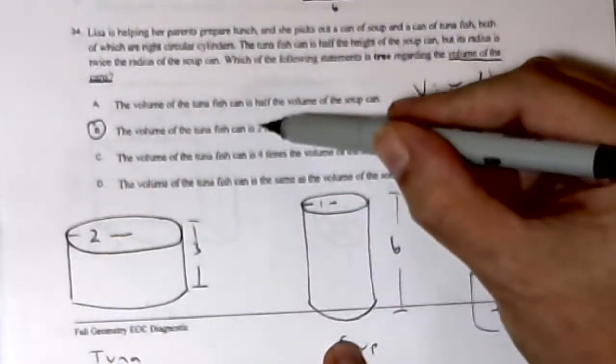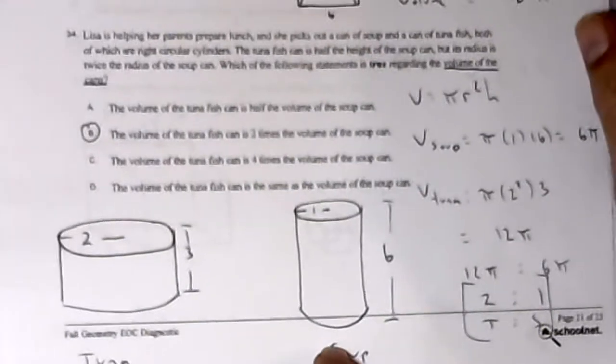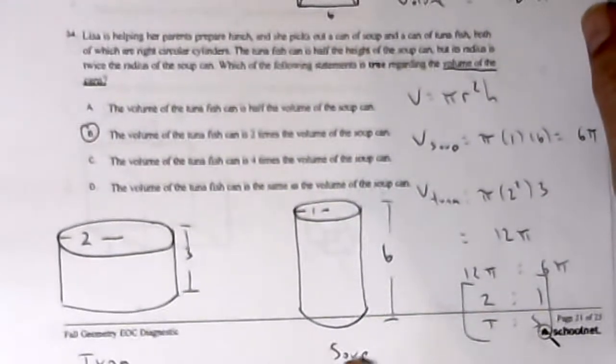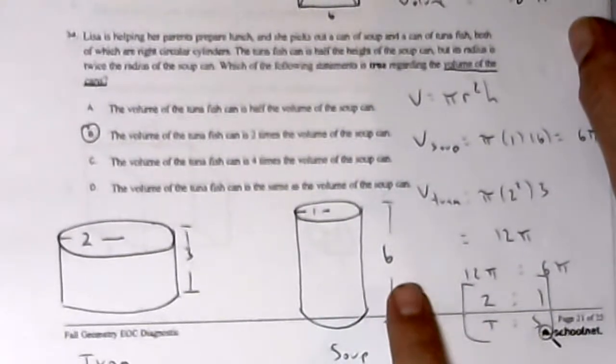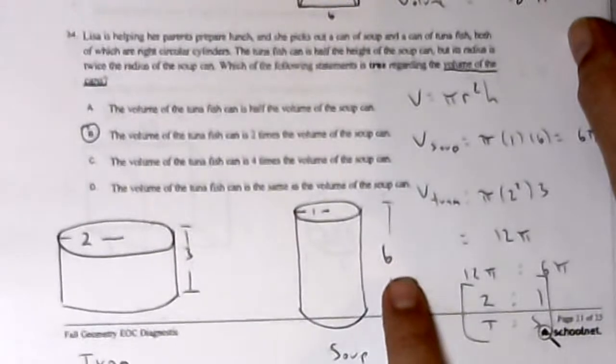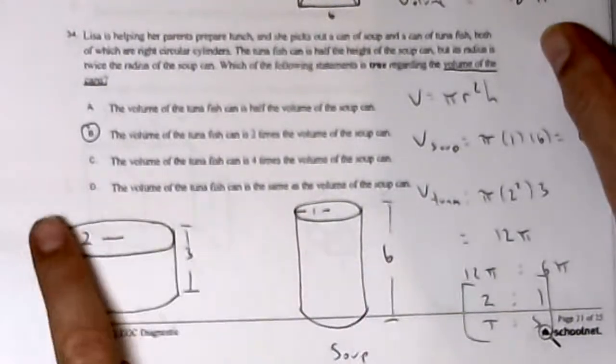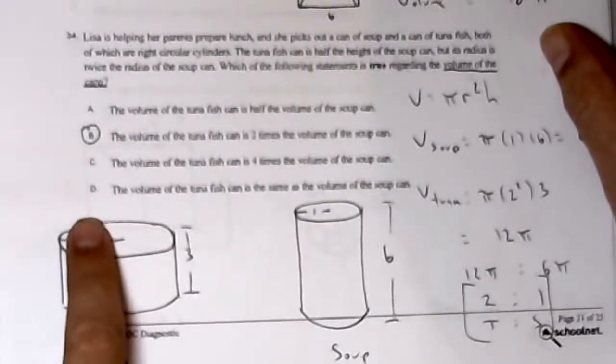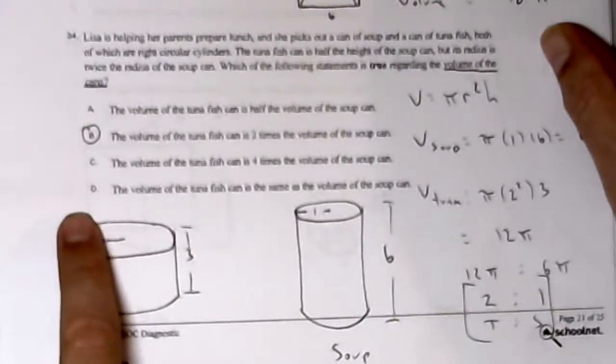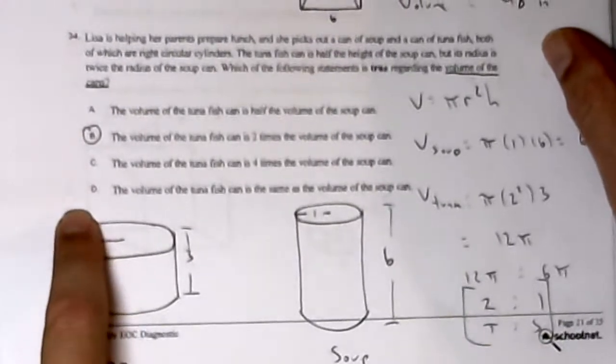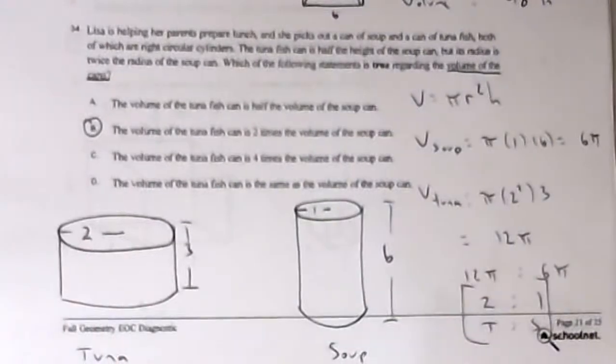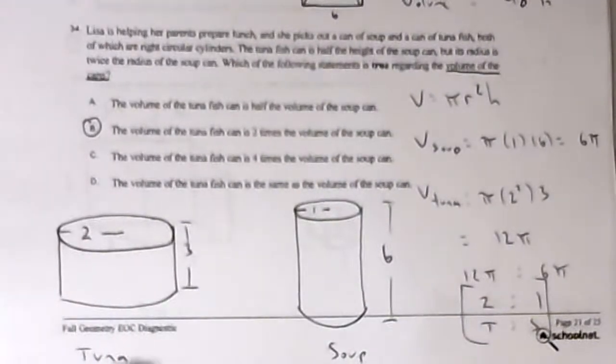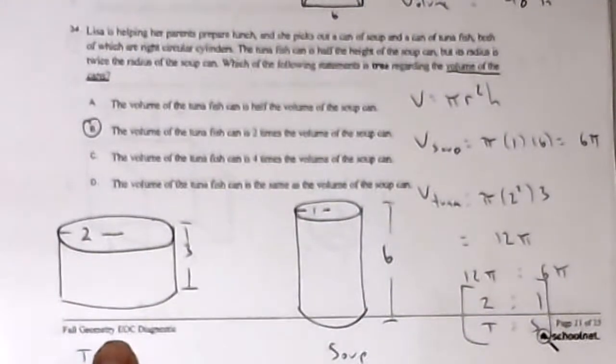The volume of the tuna can is twice the volume of the soup can. This comes from: if I double the height, I'm going to double the volume. But if I double the radius, I'm going to quadruple, times 4, the volume. So the net effect is doubling for the tuna.